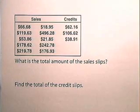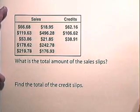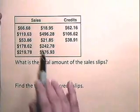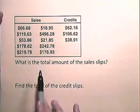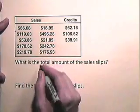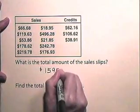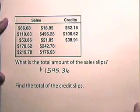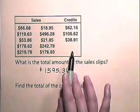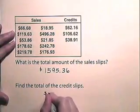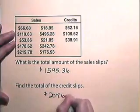Now let's look at an exercise involving a credit card transaction. The following credit card transactions occurred at a business during a recent period. What is the total amount of the sales slips? We will add up all of these sales and the total is $1,595.36. We will now find the total of the credit slips. Adding these three credits, the total is $207.69.